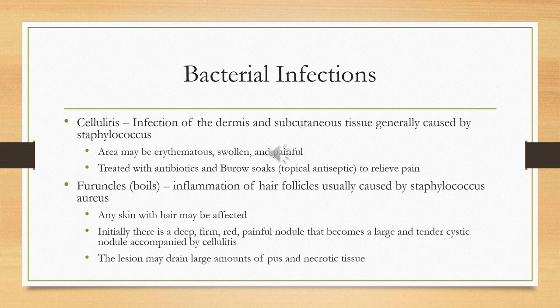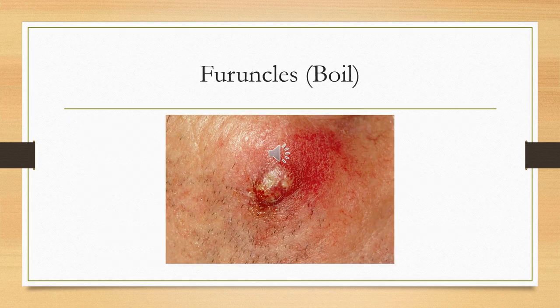Furuncles are boils — inflammation of a hair follicle caused by a staph infection. Any area of skin where you have hair can be affected by these boils. A carbuncle is a collection of infected hair follicles. Carbuncles typically occur on the back, neck, or lateral thigh.